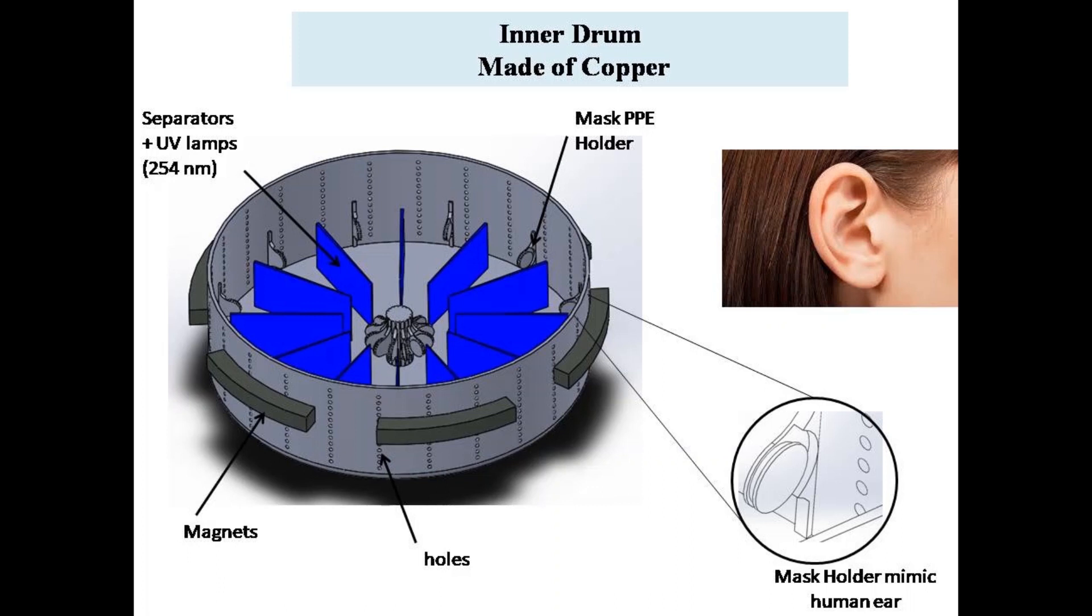Inner drum is made of copper which in itself is a disinfectant material. It consists of PPE mask holders that mimic the structure of human ear. Such structure helps PPE to spread properly.